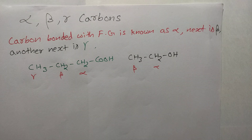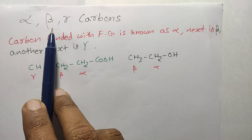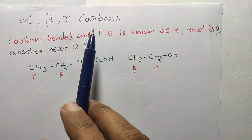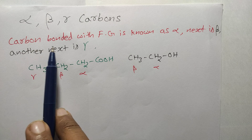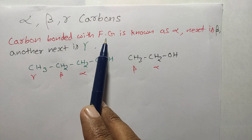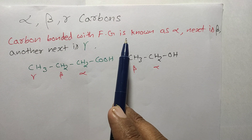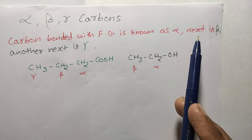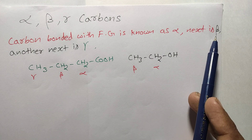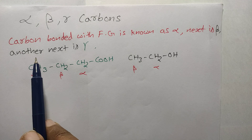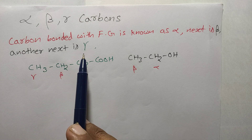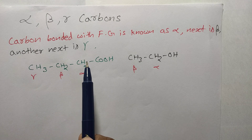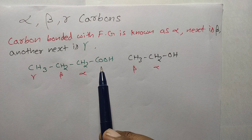Now I will explain how to find alpha, beta, and gamma carbons. The carbon bonded with a functional group (FG) is known as alpha. The next carbon is beta, and the one after that is gamma.